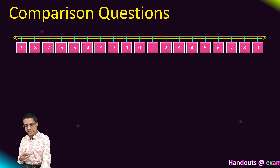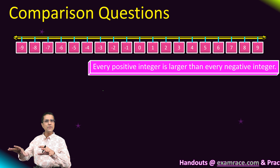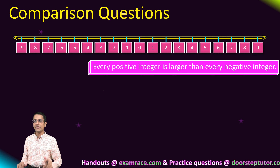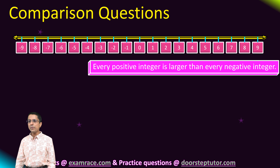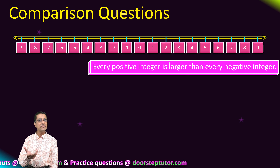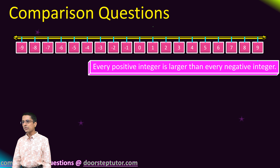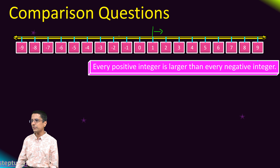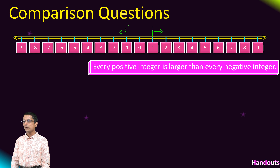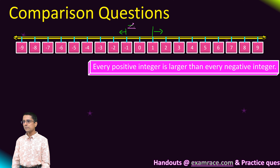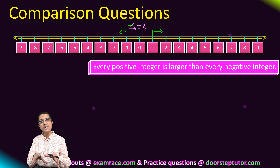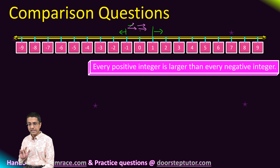Based on this, let's consider some generalized comparison relations on this number line. First: every positive integer is larger than every negative integer, because all positive integers lie to the right of all negative integers on the number line, and therefore all positive integers are bigger than all negative integers.